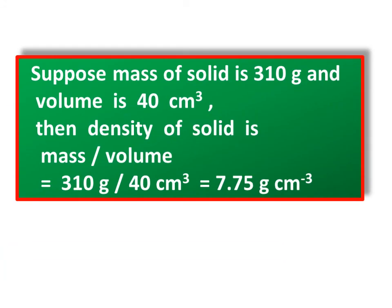Suppose mass of solid is 310 gram and volume is 40 centimeter cube, then density of solid is mass divided by volume, equal to 310 gram divided by 40 centimeter cube, equal to 7.75 grams per centimeter cube.